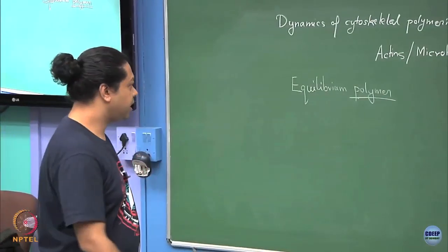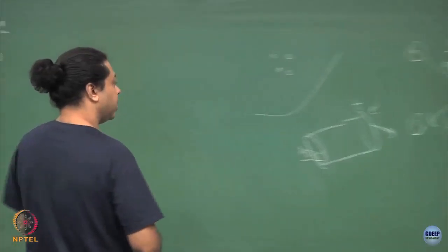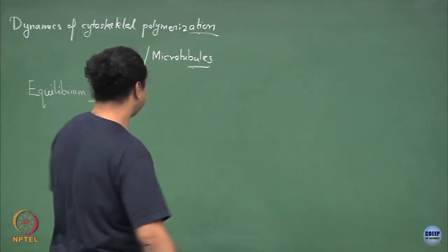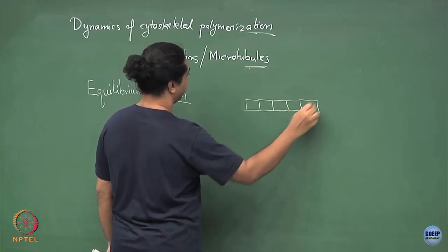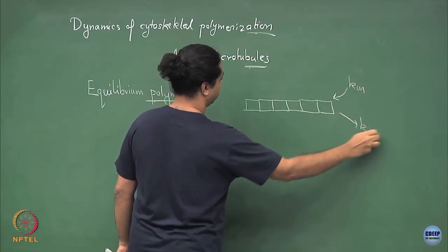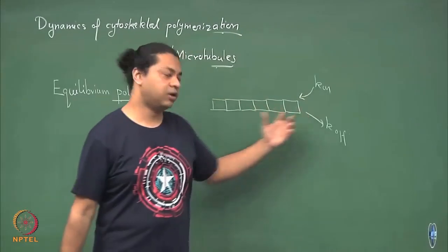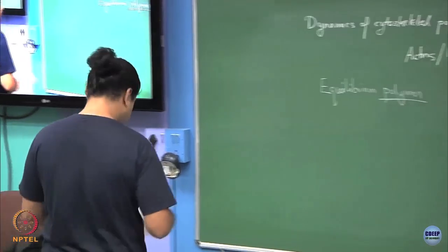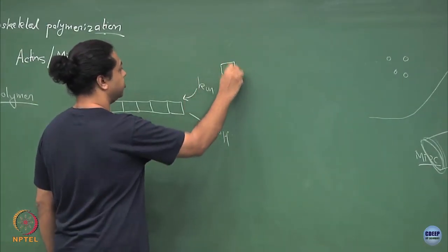Here what we will say is that I will forget a lot of this complexity that I just described and I will put it back in slowly. So I forget that there are these two states, the GTP and the GDP and so on. I just consider a simple polymerization process where I have these subunits being added with some rate k_on and being taken off with some rate k_off. This could be a model for actin or for microtubules because I have thrown away all the relevant distinctions between them. And the polymer only grows and shrinks by the addition of a single monomer.